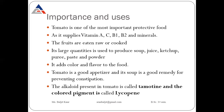Regarding the importance and use of tomato: tomato is one of the most important productive foods. It provides Vitamin A, Vitamin C, Vitamin B1, B2, and many minerals. The fruit of tomatoes can be eaten raw as well as cooked. Large quantities of tomato are used to produce soup, juice, ketchup, puree, paste, and powder. Tomato adds color and flavor to food, is a very good appetizer, and its soup is a good remedy to prevent constipation.